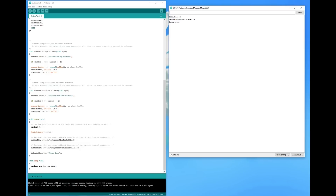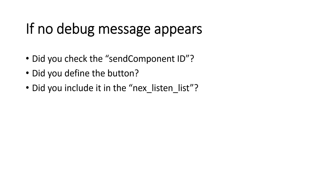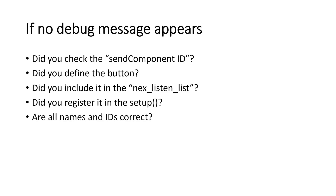In the serial monitor we see also the events and the debug messages. If you press a button and you do not see a message appear, something is wrong. Then check all the steps we just did: Did you check the send component ID? Did you define the button? Did you include it in the NexListenList? Did you register it in the setup? Are all names and IDs correct? If everything is correct, it should work.